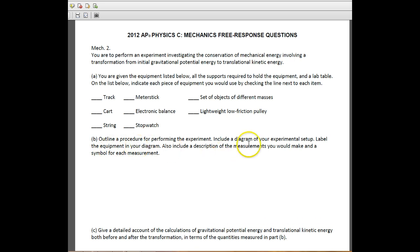They want you to outline a procedure for the experiment. Make sure you include a diagram, so that's really critical here. You have to include a diagram, label the equipment, you have to include a description of the measurements, and a symbol for each measurement. If you don't do all those things, you won't get full credit for this.